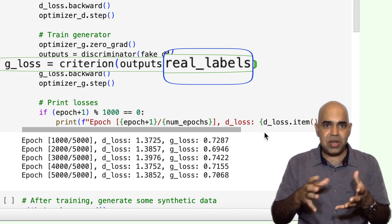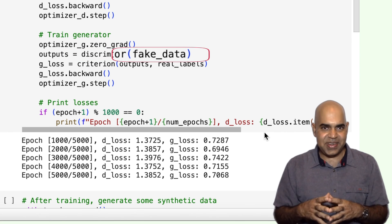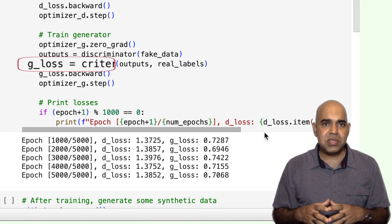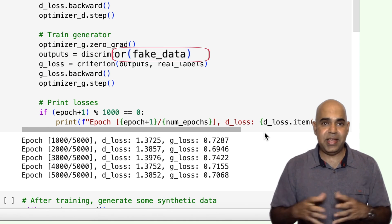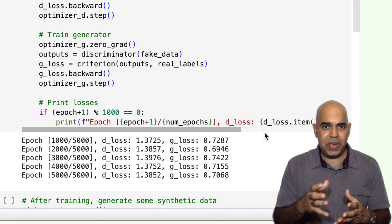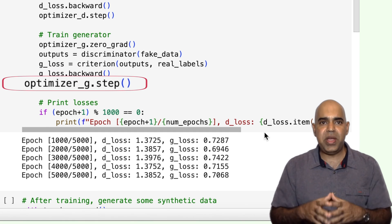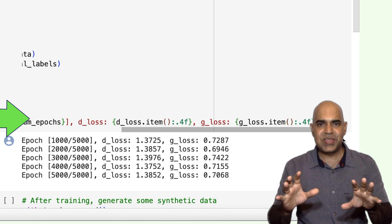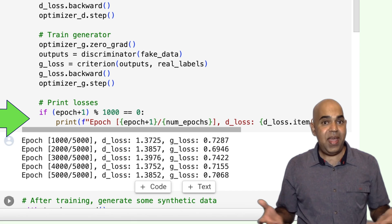Therefore, the generator's loss is based on how well the discriminator was fooled by the fake data. A higher generator loss indicates that the discriminator easily identified the data as fake. We then compute the gradients for the generator and update the generator's weights. We print the losses for both the discriminator and the generator after each 1,000 epochs. Again, the key idea behind training GANs is that the generator tries to produce data that is indistinguishable from real data.